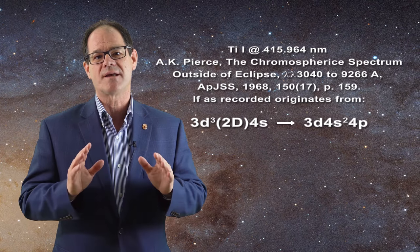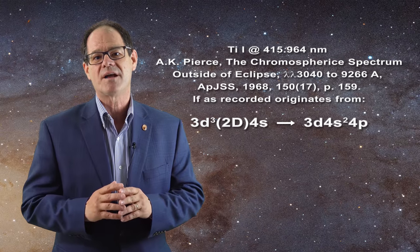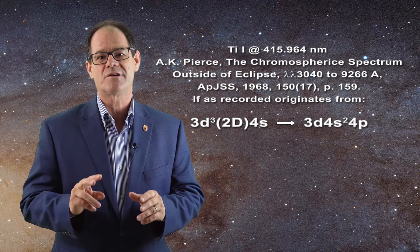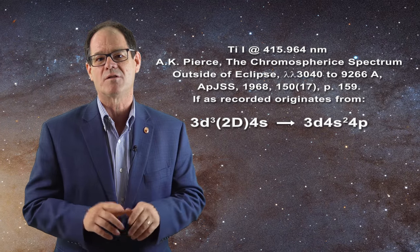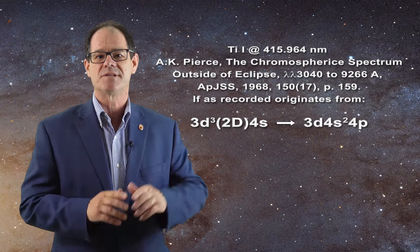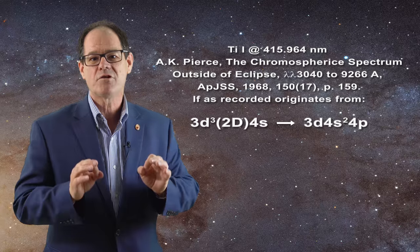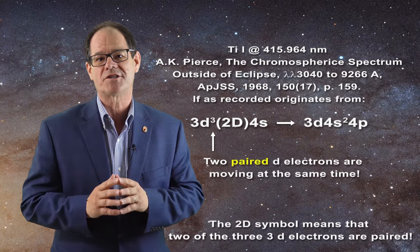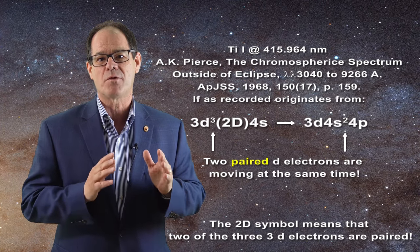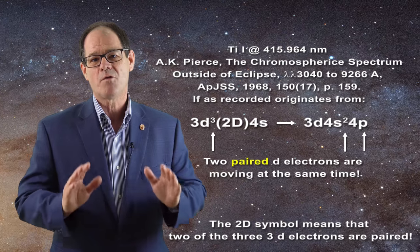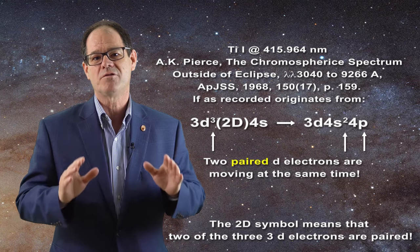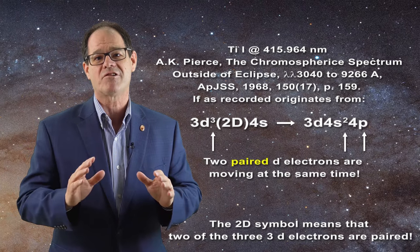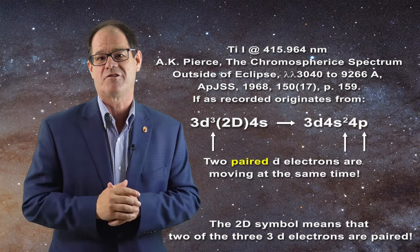An example of a two-electron transition occurs with the titanium one line. This line is produced by a two-electron transition from a set of paired electrons in a D shell lower energy state, as you can see here. One of the two electrons moves into the 4s shell and the other into the 4p shell. This can open up two molecular shells for bonding, and that could be used to bind molecular hydrogen rather than atomic hydrogen.